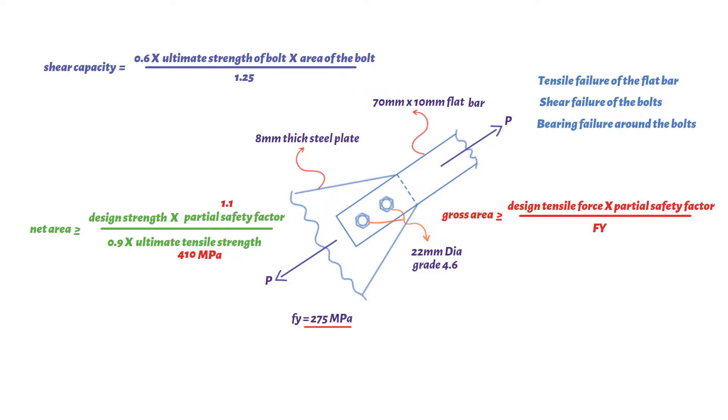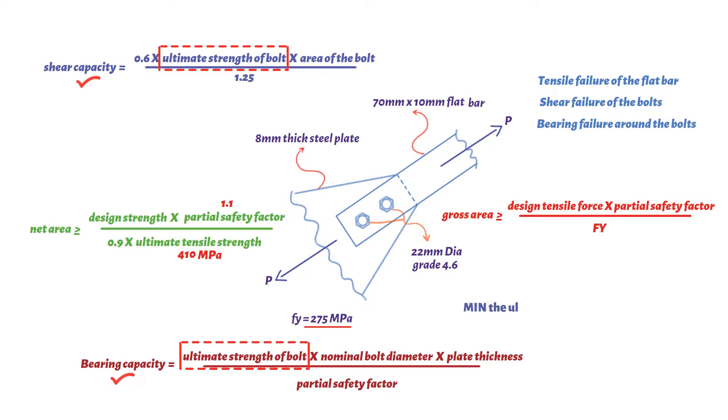Finally, bearing capacity equation, which equals ultimate strength of bolt times nominal bolt diameter times plate thickness divided by partial safety factor. Note in the last two equations, ultimate tensile strength is the minimum of the ultimate strength of either the bolt or the plate.